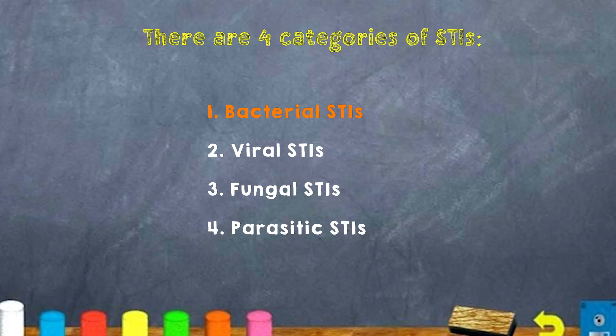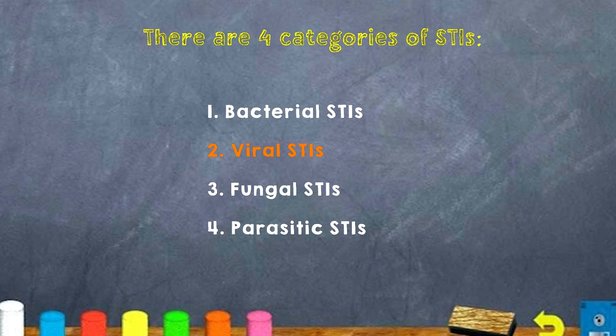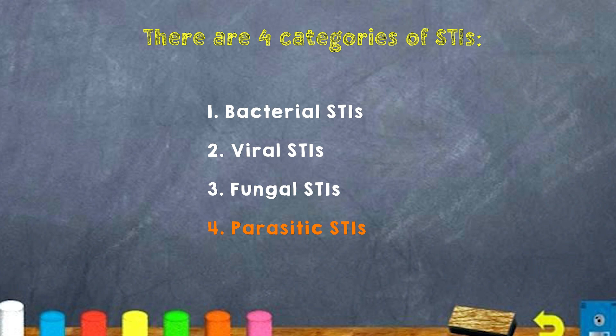There are four categories of STIs: number one, bacterial STIs; two, viral STIs; three, fungal STIs; and four, parasitic STIs.